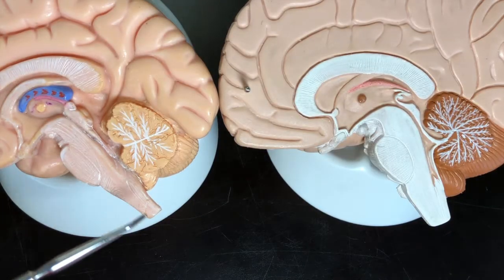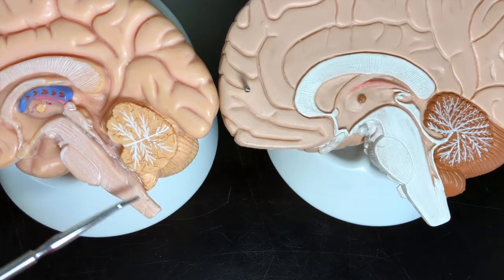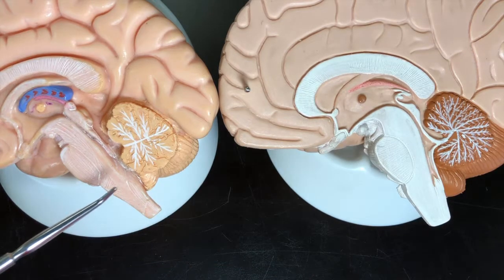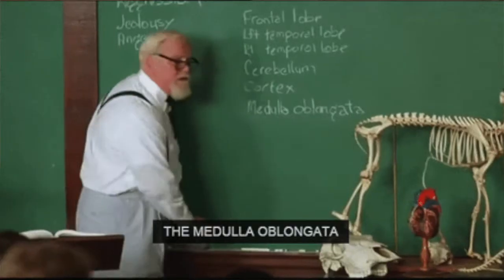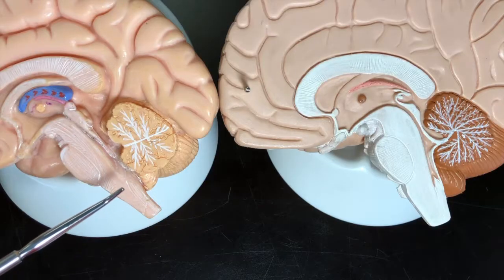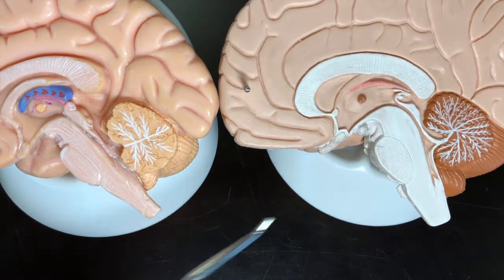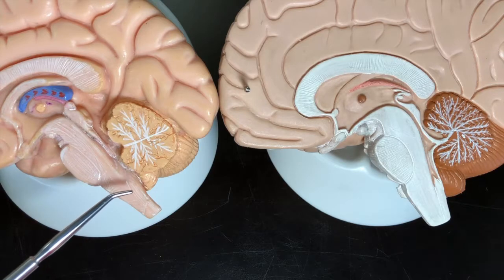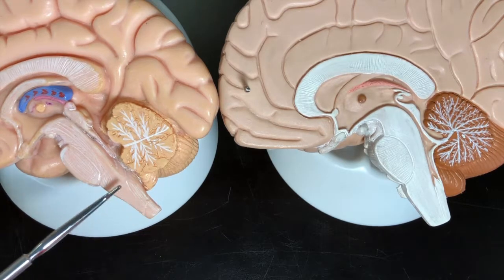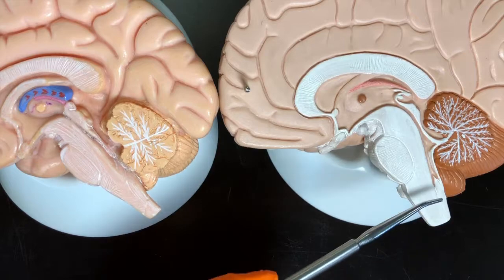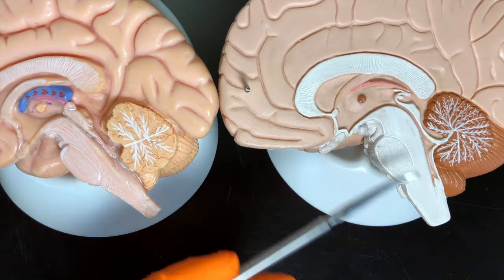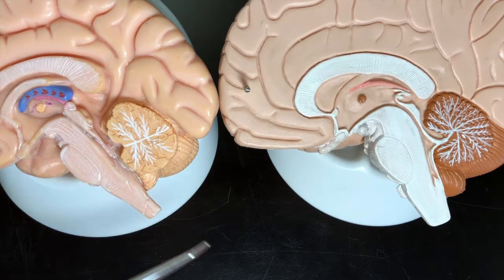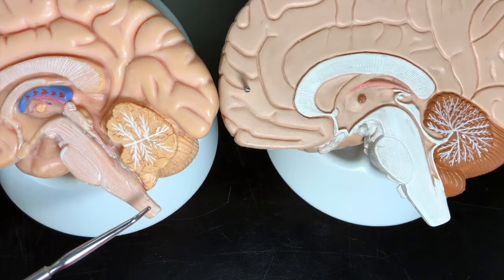Inferior to that we have the medulla oblongata — I've heard many pronunciations of this, so however you pronounce it, as long as it's common and correctly spelled — and that is this area right here. The medulla oblongata is very important because it connects everything up here to the spinal cord. If we continue inferiorly, this will very quickly become the spinal cord, bridging what we looked at with the spinal cord to what we're doing this week with the brain.